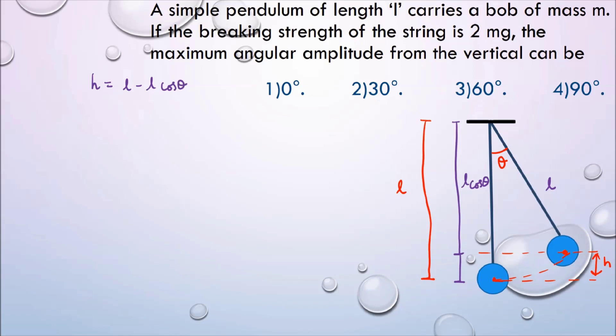L is the total length and L cos θ is the projection vertically when the pendulum is making an angle theta with the vertical. So the height raised by the bob is h which is equal to L minus L cos θ. Here I can take L as common. So L(1 minus cos θ) is the height.